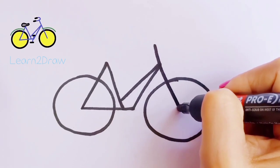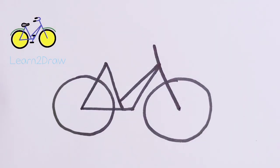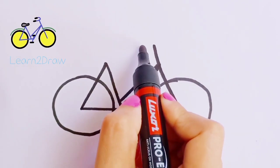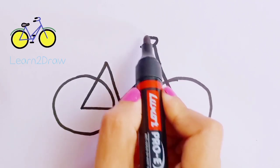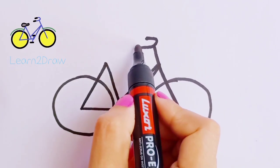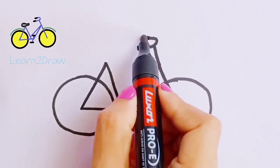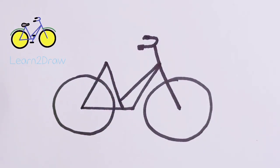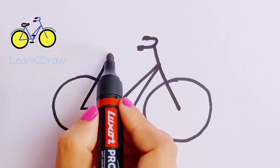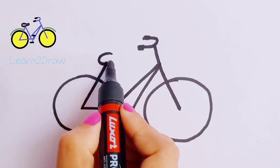Like this, you can use a scale to draw straight lines. This is the handle, and this is the seat.